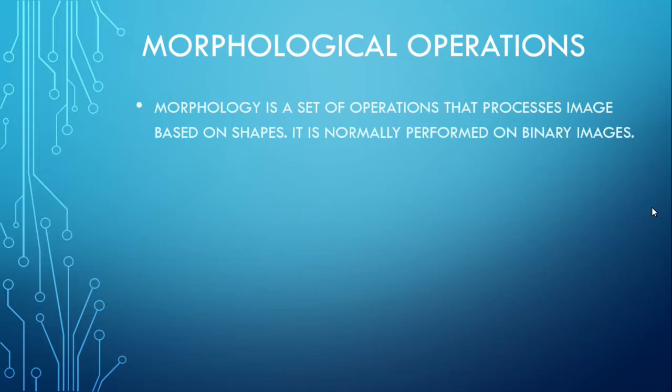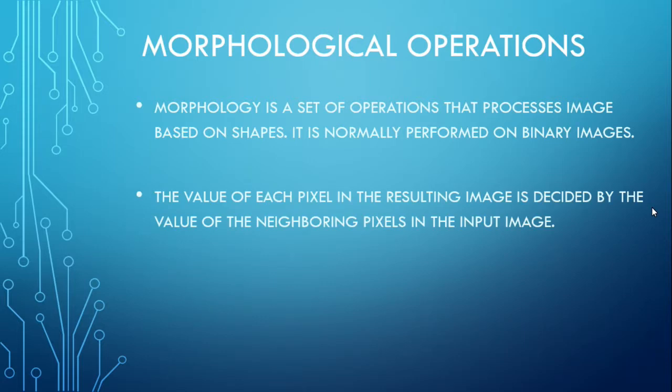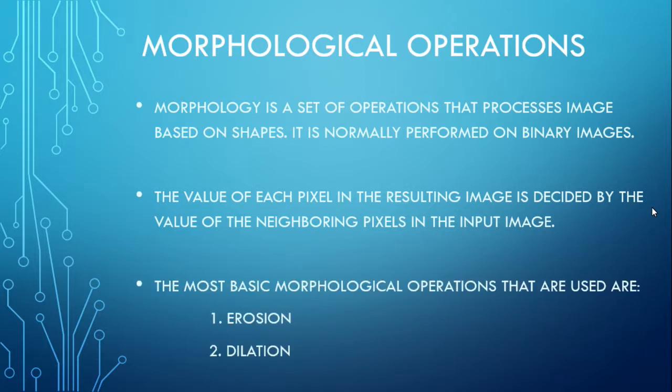Morphology is a set of operations that process images based on shapes. It is normally performed on binary images. The value of each pixel in the resulting image is decided by the value of the neighboring pixels in the input image. The most basic morphological operations that are used are erosion and dilation.